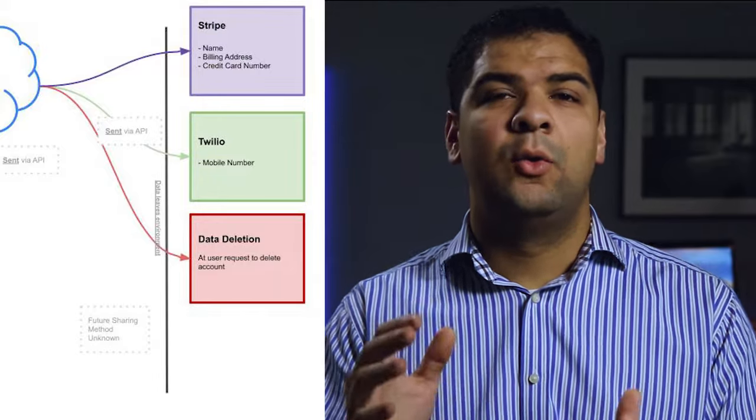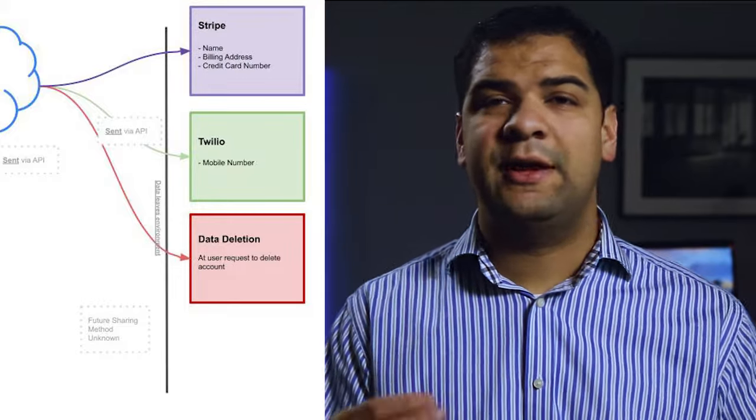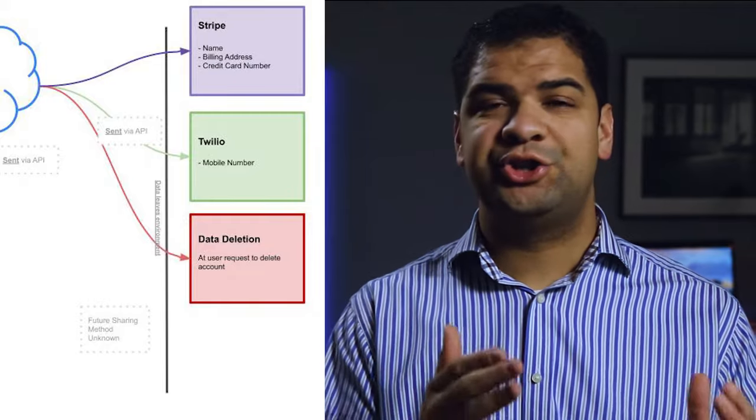Pick another data entry point — maybe a help desk phone system where people call in and provide information. Draw another box on the left side, fill in the information collected via phone calls, and draw a line showing where that data goes. Do this for every possible place where data is collected. Then move to the other side of the page where data leaves the environment: maybe it's deleted, shared with third parties, stored in a third-party ticketing system. Draw a line to a box showing who it's shared with, list out what data is shared, and the reason it's shared.